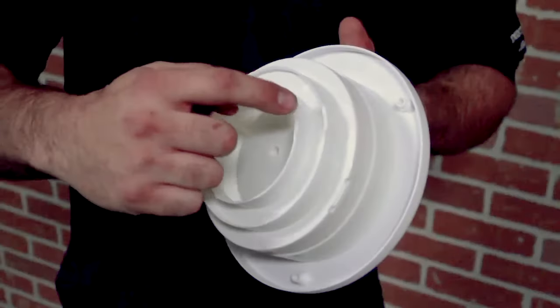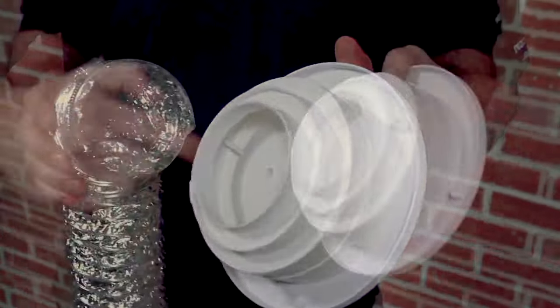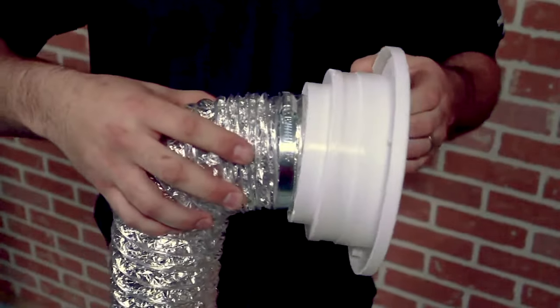The soffit vent is designed to work with either 4 inch, 5 inch, or 6 inch ducts. If used with a 4 inch duct, please ensure the 4 inch collar is attached to the soffit vent.